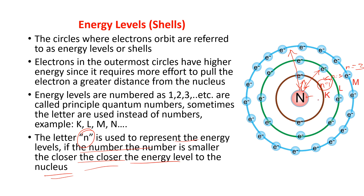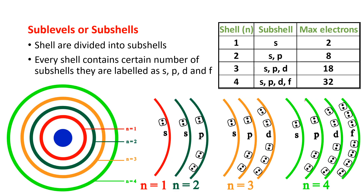Next are sub-levels or subshells. In the previous slide we saw the shells: n=1, n=2, n=3, n=4, and so on. In the diagram, the inner circle is n=1 (the first shell), then the second shell n=2, the third shell n=3, and the fourth shell n=4. Each and every shell has its own subshells.